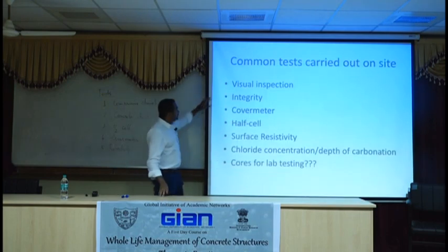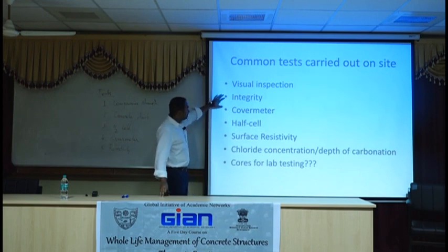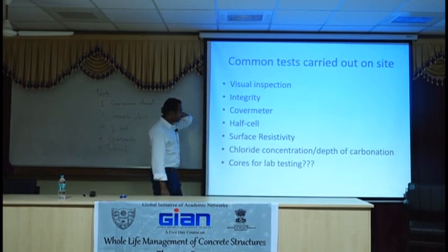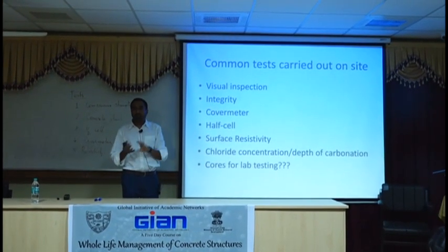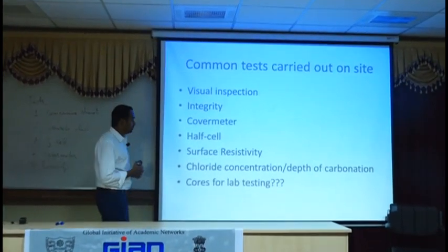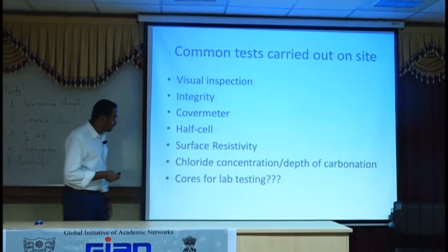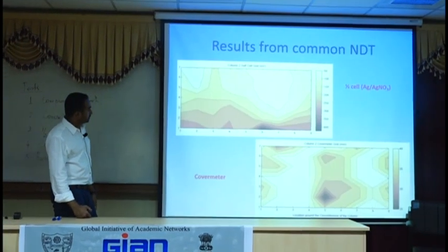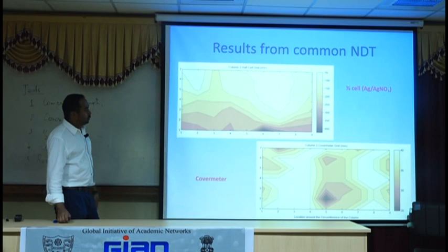So this is what we did: usual visual inspection, identify good and bad locations visually. If you can do an integrity test, you can confirm whether that's a good or bad location. An integrity test is your UPV, your rebound hammer, or any other test. And then you plot it.